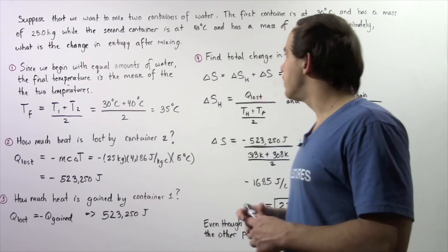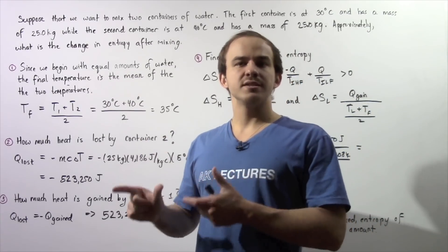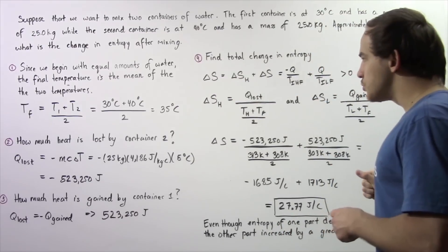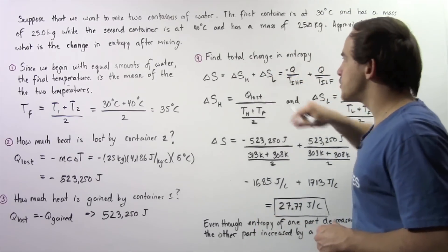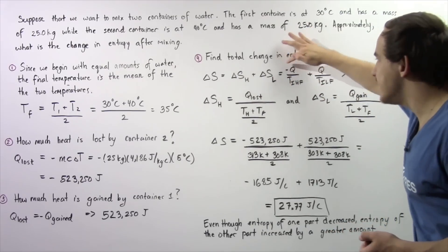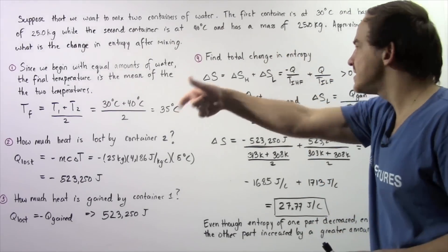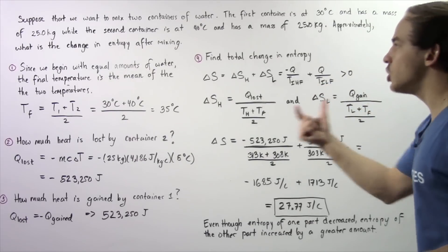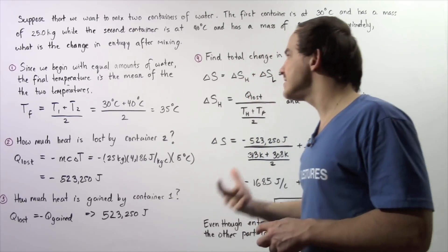Now let's move on to the final step, step four: find the total change in entropy. We're approximating because the temperature doesn't actually remain constant. From the second law of thermodynamics, the total change in entropy equals the change in entropy of container one plus the change in entropy of container two, where H denotes the high temperature and L denotes the low temperature. This equals negative Q divided by the intermediate temperature between the high temperature and the final temperature, plus the energy gained by container one divided by the intermediate temperature between the low temperature and the final temperature. This must always be greater than zero for a real process in an isolated system.